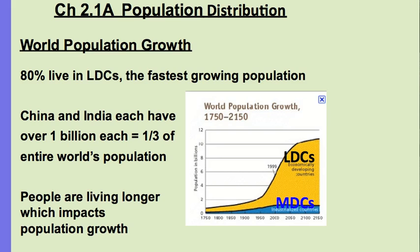When you look at this chart, the blue part of the graph represents the industrialized countries or MDCs, and the orange or gold part represents economically developing countries or LDCs. You can see around 1950 that population growth explodes, especially with LDCs.